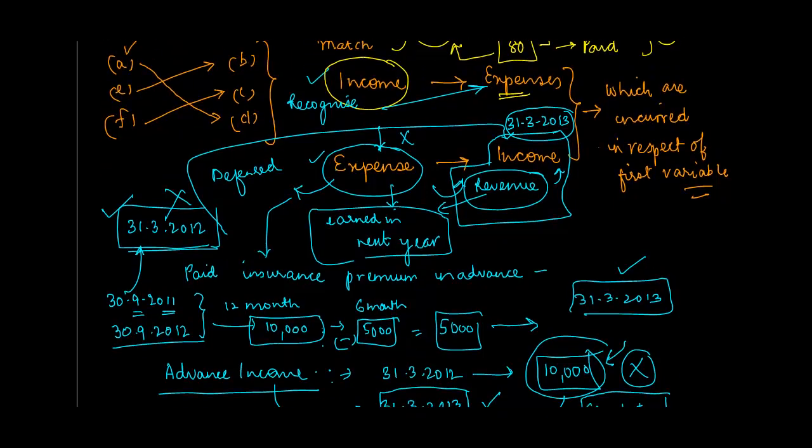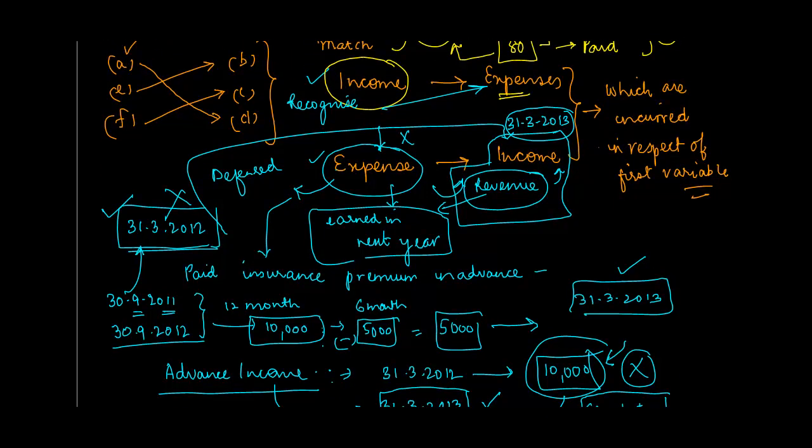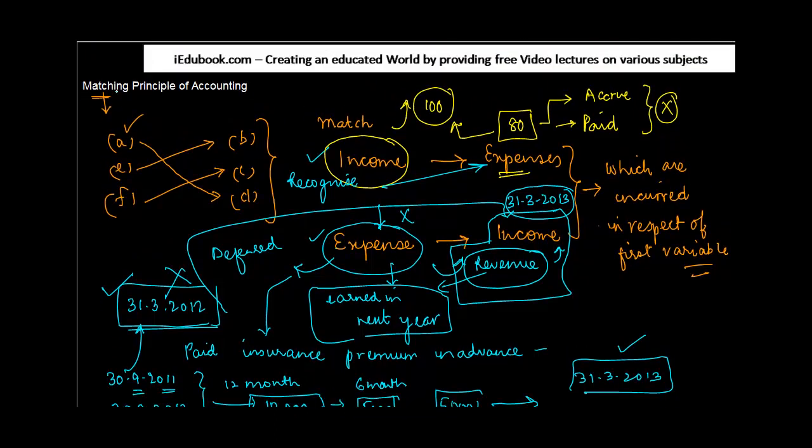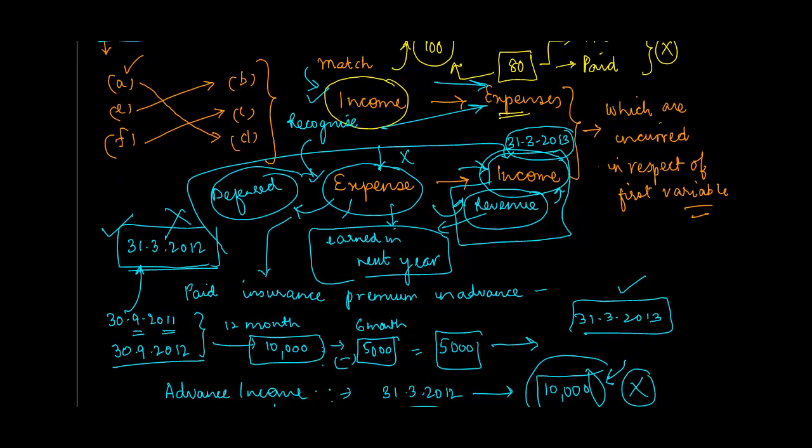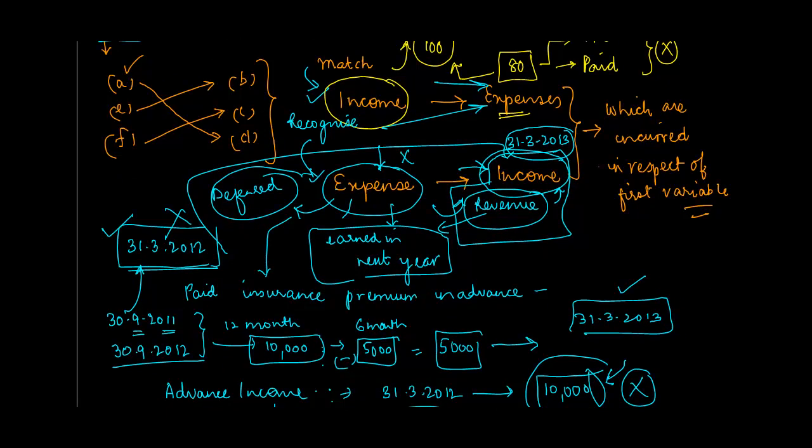The matching principle for accounting has three important points: First, whenever we recognize income, all the related expenses are booked in the same profit and loss account. Second, if you get an expense which is to be used or incurred against income to be provided in the subsequent financial year, you don't recognize this expense - you defer it. Finally, if you get advanced income, you don't book it as an income, you just show it as a liability.